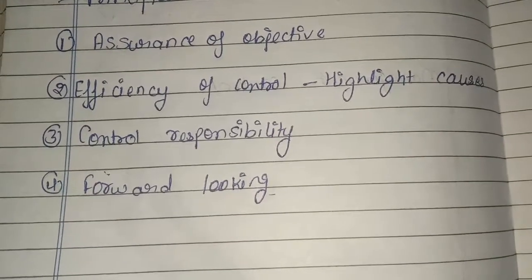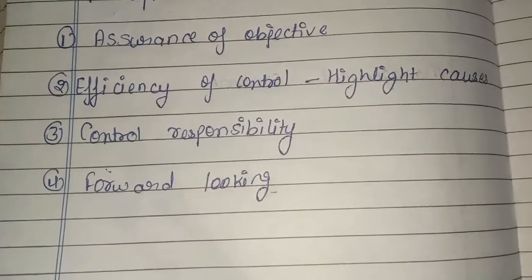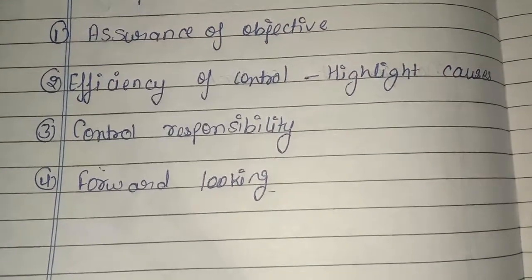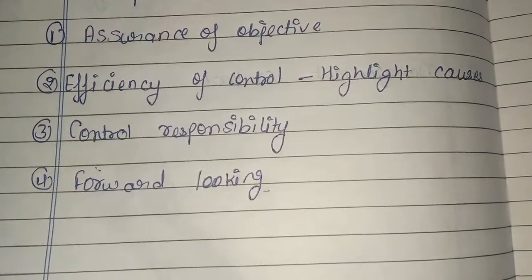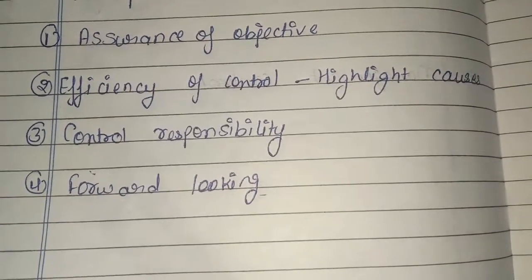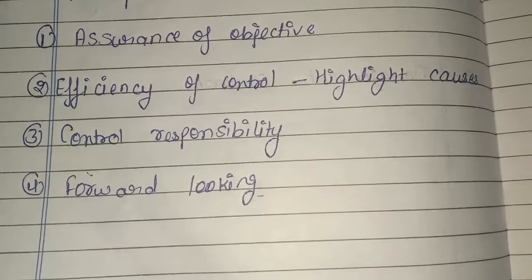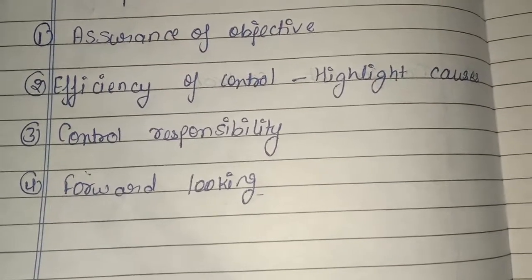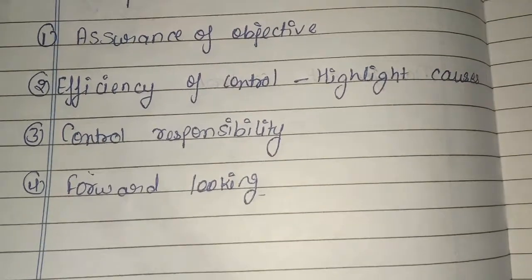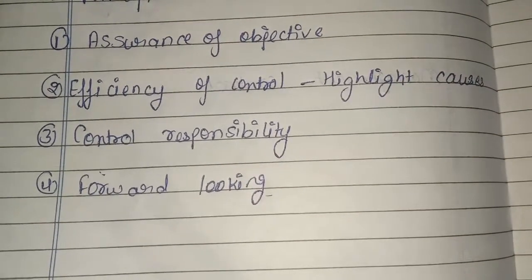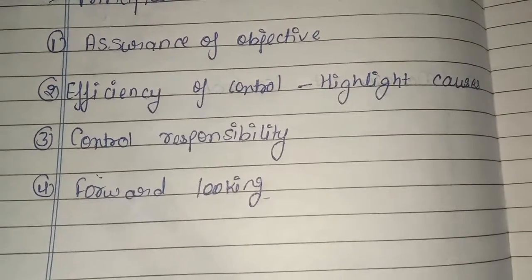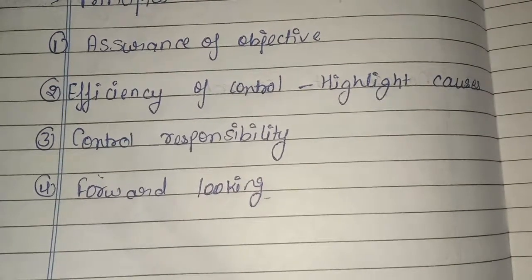चौथा principle है forward looking। जब हम management control की बात करते हैं तो हम यह सोचते हैं कि यह आगे के लिए बहुत helpful होगा। जब हम current में ही control कर लेंगे, तो आगे आने वाले time में हमारा काम और ज्यादा efficiently होगा। So guys, this is all about management control. If you have any doubt, do let me know in the comment section below and also check my playlist for more further information.